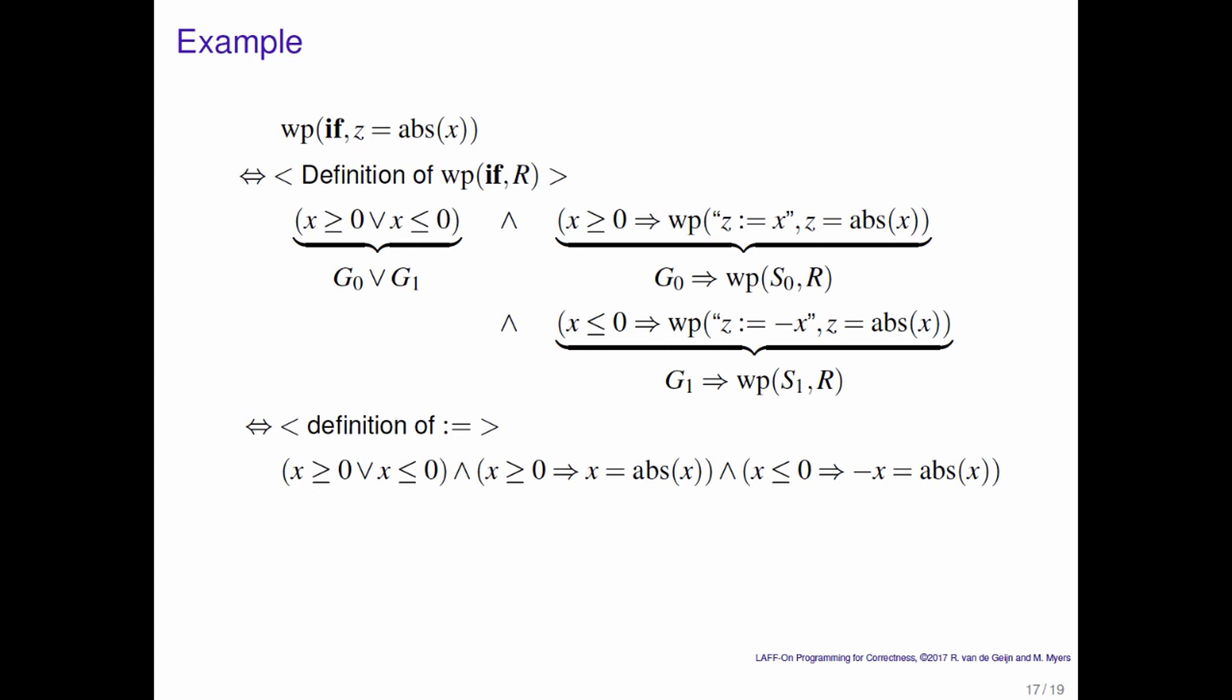What else do we know? Well, we know that x greater than or equal to 0 or x less than or equal to 0 evaluates the true. We're going to be a little bit sloppy and we're just going to talk through the fact that if x is greater than or equal to 0, then that implies that x is equal to the absolute value of x. So that gives us the second true.